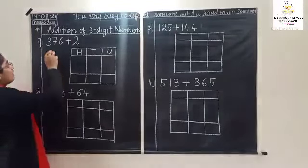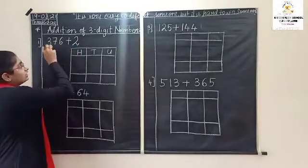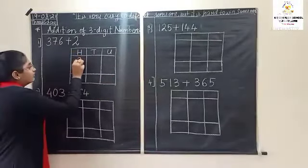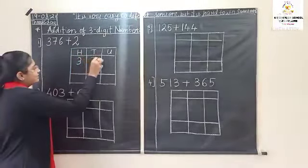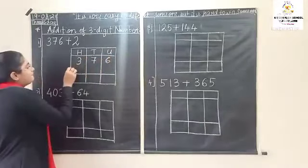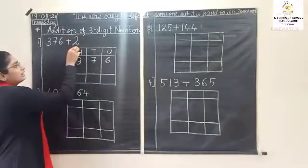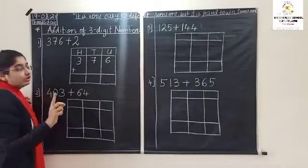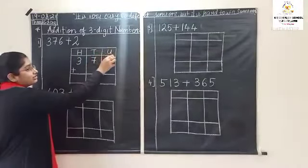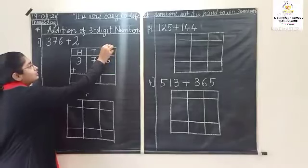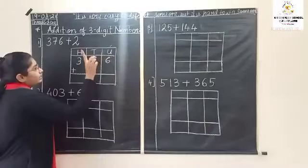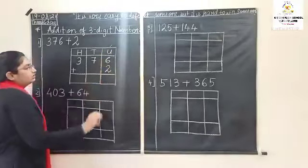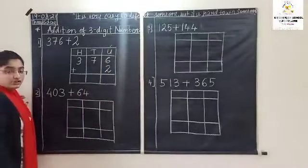Now, write the number — arrange the number in this table. Three hundred and seventy-six plus two. Two is a one-digit number, which will come in units place. One digit means units place, so two will come here.